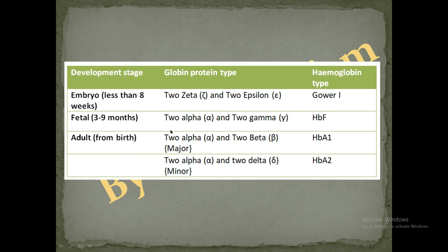Regarding hemoglobin chain types: in embryonic hemoglobin there are 2 zeta and 2 epsilon chains. In the fetal case, for a fetus of 3 to 9 months, there are 2 alpha and 2 gamma chains — alpha2 gamma2 — also known as HbF, the hemoglobin of the fetus.